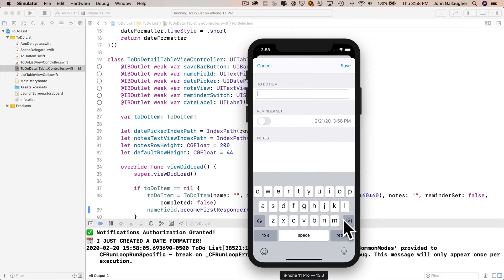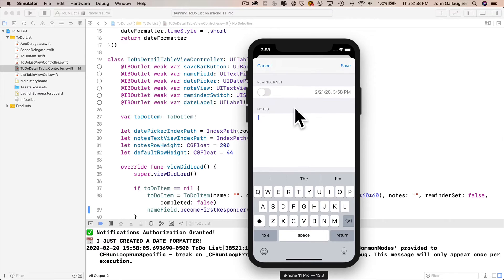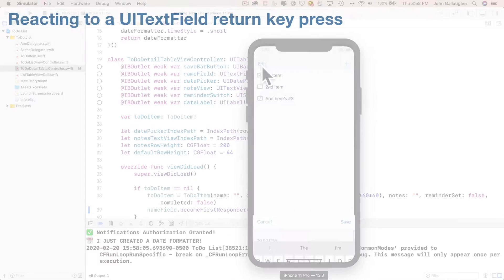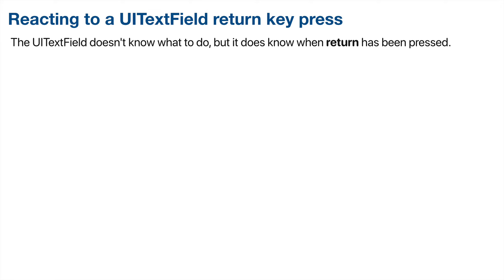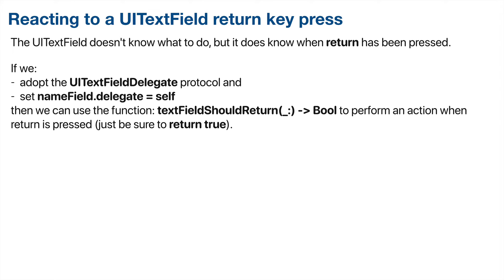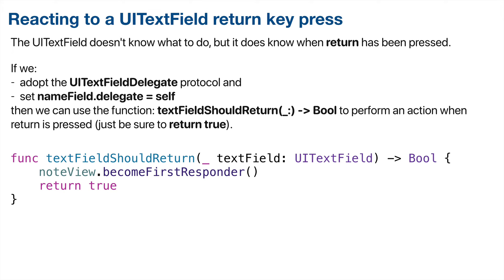Let's improve the user experience for the return button on the keyboard. If you're in the name field and press return, it currently does nothing. A better user experience would be to move down into the notes field so the user can enter a note. The UI text field doesn't know what to do with return, but it can send a message to its delegates. If we adopt the UITextFieldDelegate protocol, set nameField.delegate equal to self, and write a textFieldShouldReturn function, we can set noteView to become first responder — automatically moving focus out of name field while keeping the keyboard up. Make sure you return true as well.